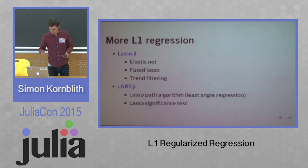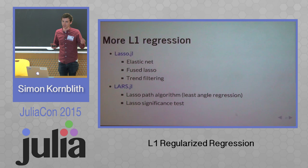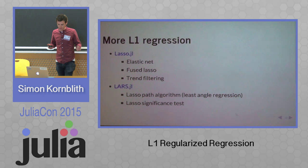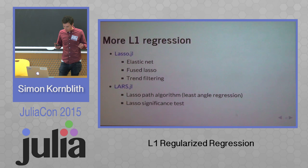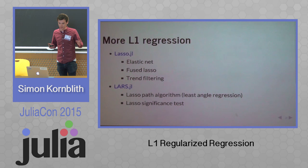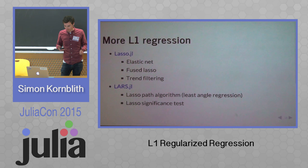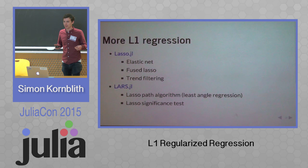There's also more stuff in these packages. You can do the elastic net, which is a combined L1 and L2 penalty. You can do the fused lasso, which is a penalty on the difference between successive values in a time series. You can do trend filtering, which is a penalty on the second, third, or higher derivative of a time series. All of those are implemented in lasso.jl. I also have a package called lars.jl, which implements another algorithm for fitting lasso models and also a significance test for predictors as they enter the lasso path.